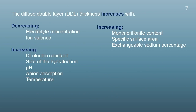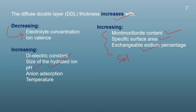To summarize: diffuse double layer thickness increases with increasing montmorillonite content, specific surface area, and exchangeable sodium percentage (soil factors). From pore water chemistry: DDL thickness increases by decreasing electrolyte concentration and decreasing ion valency; and increases by increasing dielectric constant, size of hydrated ions, pH, anion adsorption, and temperature.